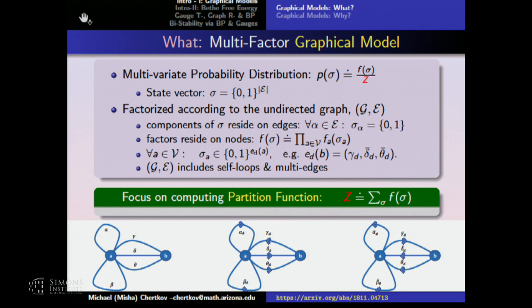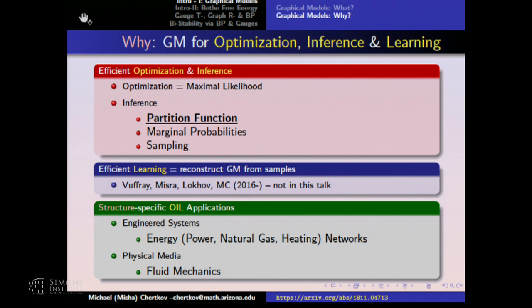The focus, as in many other talks, is on partition function. We've heard that it's useful because we can compute marginal probabilities and do sampling. There are also inverse problems — not inference but learning — which I won't touch on. Many of these problems for me come from applied math and physics related to engineering systems and fluid mechanics, but I won't discuss that. If you're interested, we can chat offline about how it applies.